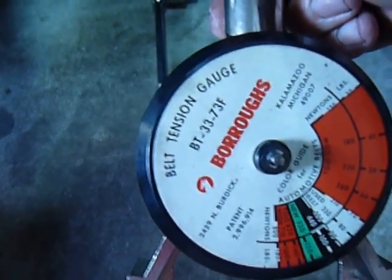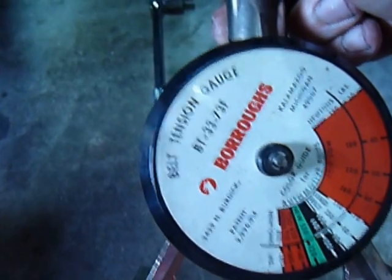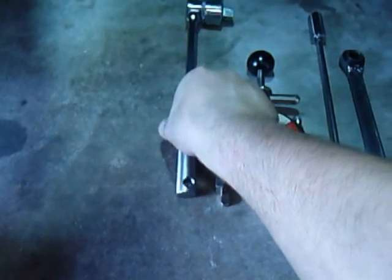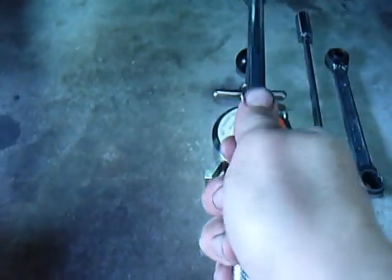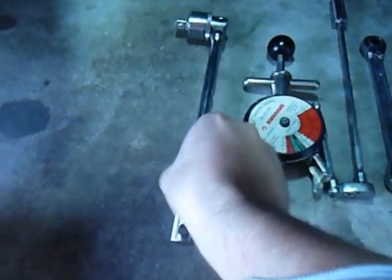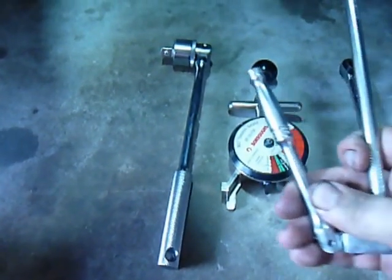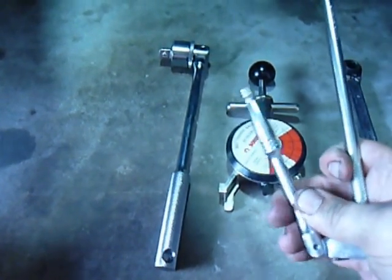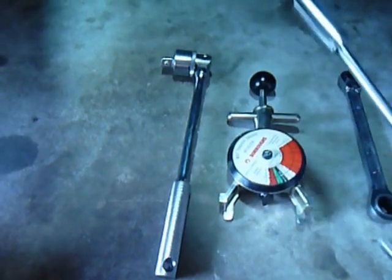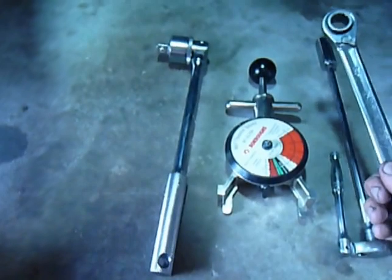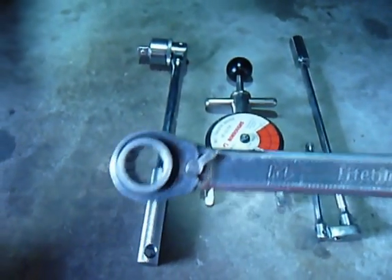Basically all you need is the belt tension gauge, Burrows BT3373F. You need a breaker bar, ratchet, a fourth inch ratchet with a 14mm long socket, and a 14mm ratchet.